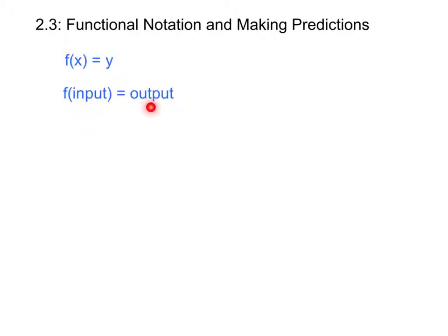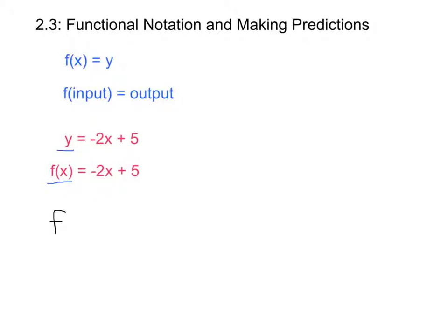The number on the other side of the equality symbol is always the output. For example, suppose we are working with this linear function: y equals negative 2x plus 5. Another way of writing this is to replace the y with the symbol f of x. It's really important to understand that f of x means the same thing as y. Now f is called the name of the function, and you don't always have to use f. Other common symbols are g and h — those are by far the three most common — but really any letter could be used.